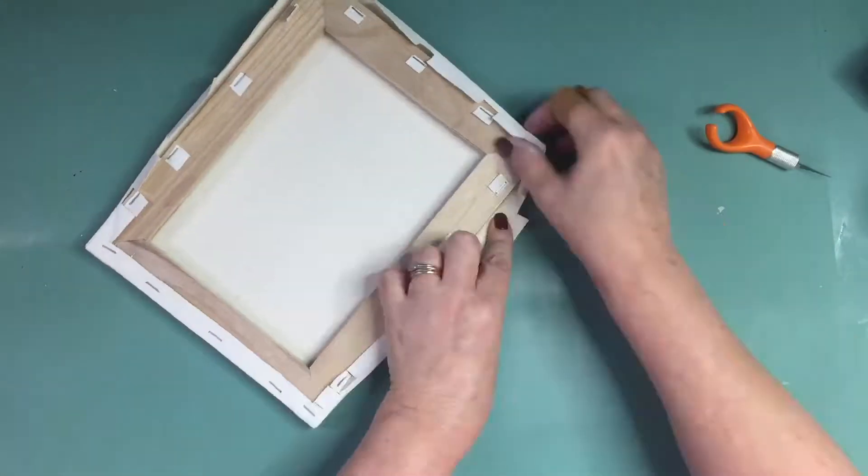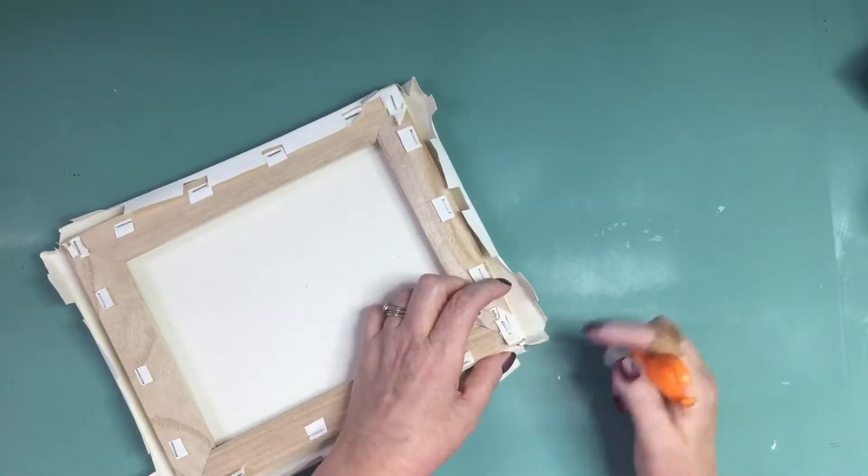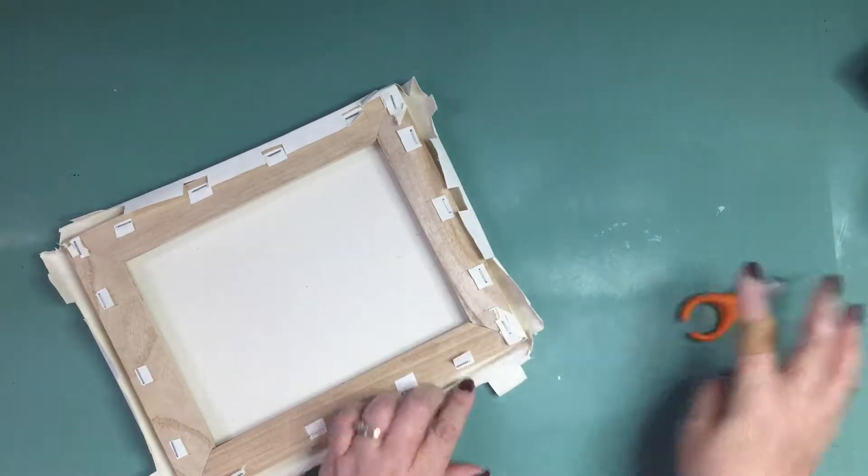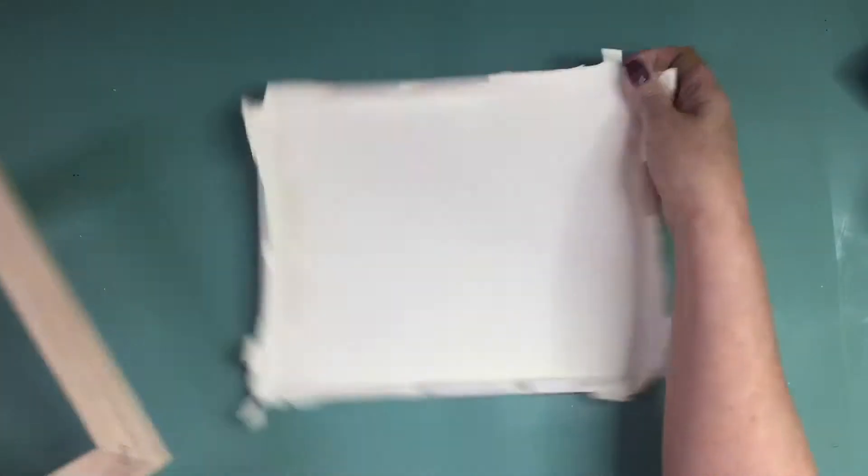If I was only this quick, right? Okay, so now that we have the canvas unattached from the frame we're going to pull it off and you're going to be able to flip it over on the right side.